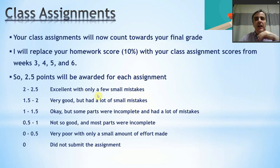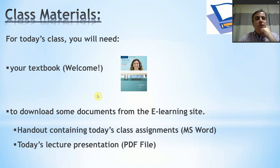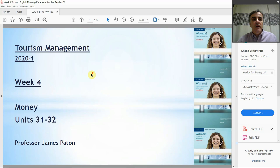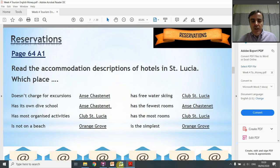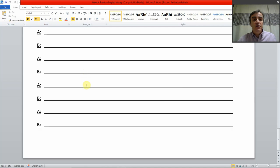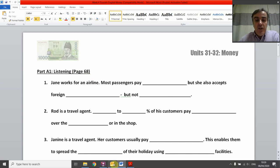If you've got any questions about that, you can ask on the Kakao group or send me a private message. Today, using the video, we will be pausing at parts. You may want to rewind parts as well, and I will give instruction when you can do that. For today's class, you will need your textbook and you will need to download the two documents from the e-learning site — the PowerPoint PDF and your class assignment worksheet. Today we've got four different parts to complete in the worksheet. Download the files and we can get ready to start.